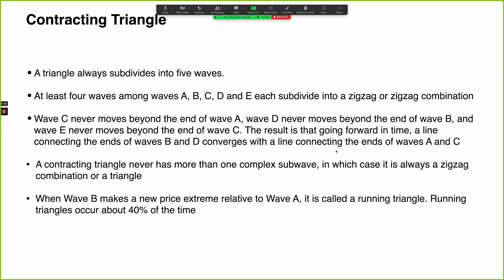Some quick notes on the contracting triangle — though this actually applies to all triangles. A triangle will always subdivide into five waves; that part is universally applicable. Each of the sub-waves in the triangle must be a zigzag or a variation thereof — which is just a fancy way of saying a double zigzag.